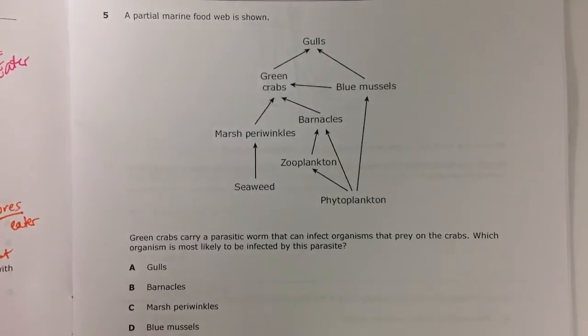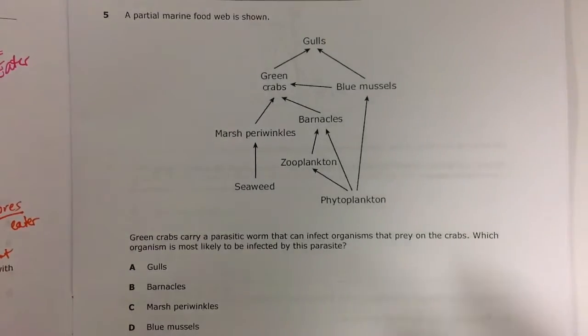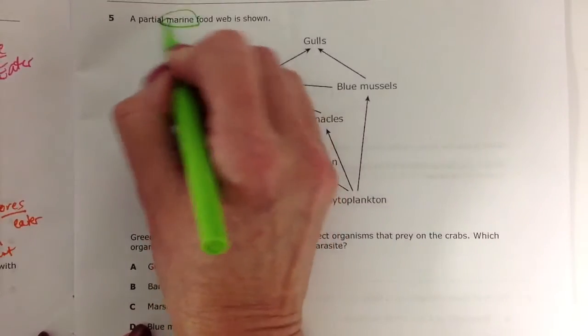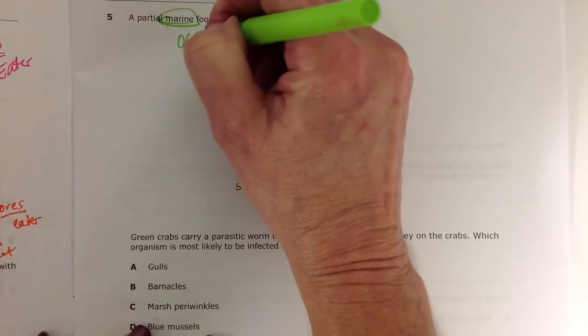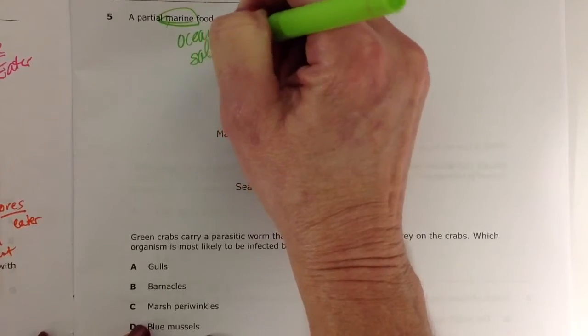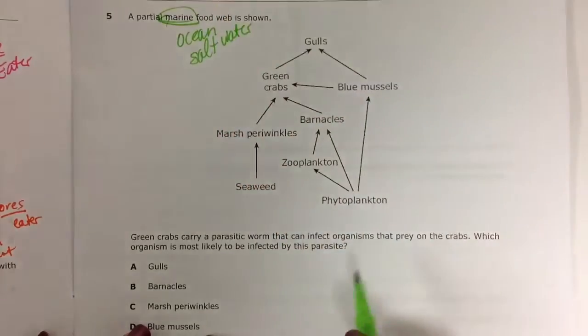Question five. A partial marine food web is shown. So marine we know is ocean. So we're talking salt water here. Let's look at it.